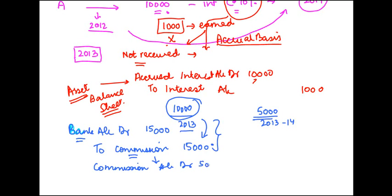You will reverse this commission or whatever account you would have credited. Commission account debit 5,000 to commission received in advance, and this is shown as a liability on the liability side of the balance sheet.